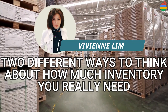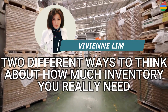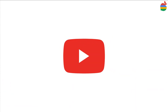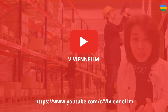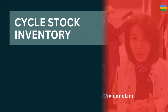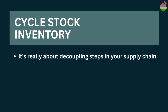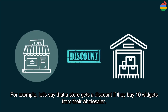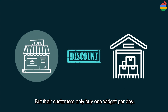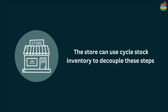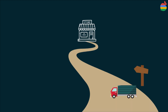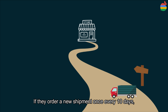In this video, I will show you two different ways to think about how much inventory you really need. The first way is called cycle stock inventory, and it's really about decoupling steps in your supply chain. For example, let's say that a store gets a discount if they buy 10 widgets from their wholesaler, but their customers only buy one widget per day.